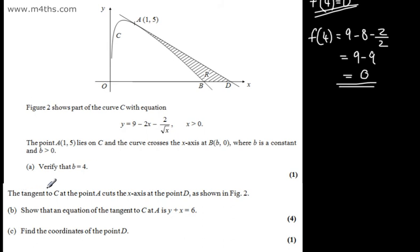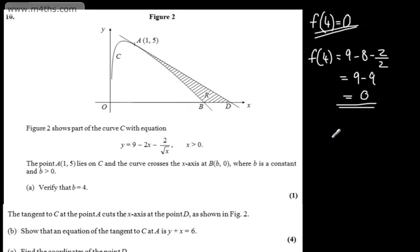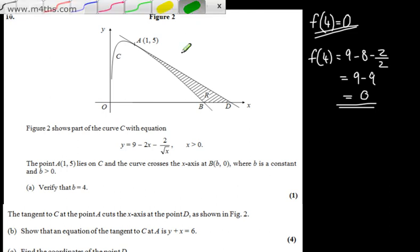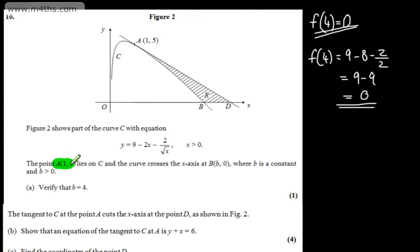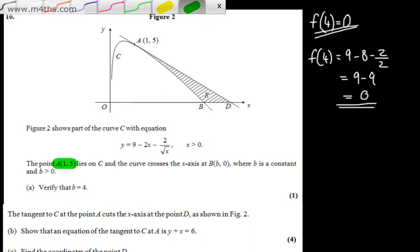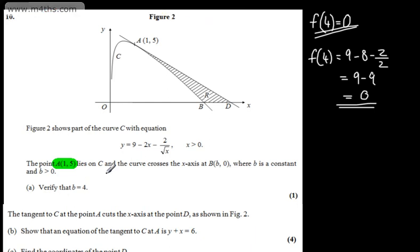We're now told the tangent to C at the point A cuts the x-axis at the point D, as shown in figure 2. In part B, we need to show that the equation of the tangent to C at A is y plus x equals 6. The equation of the tangent is a straight line, so we need a point it goes through — which we're given — and we need a gradient.